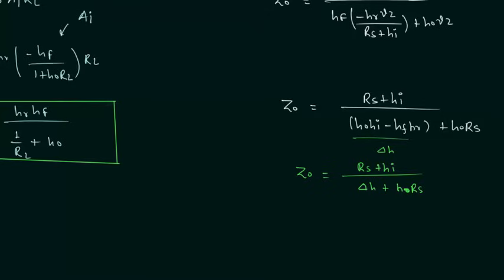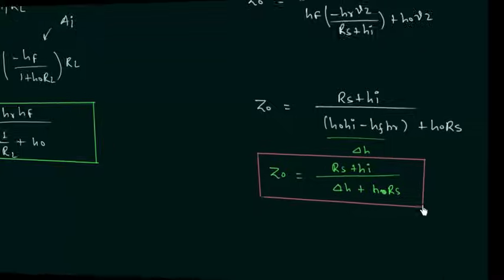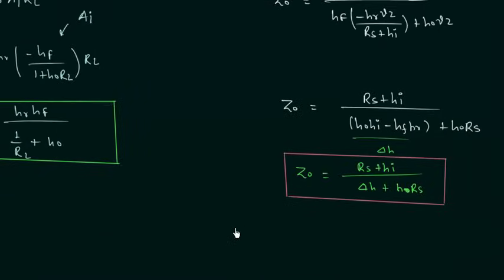This is the final expression of the output impedance, and this is all for this lecture. In the next lecture we will derive the expressions for overall current gain and overall voltage gain.